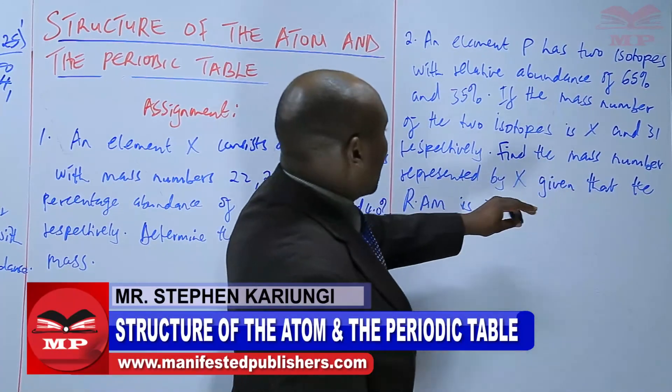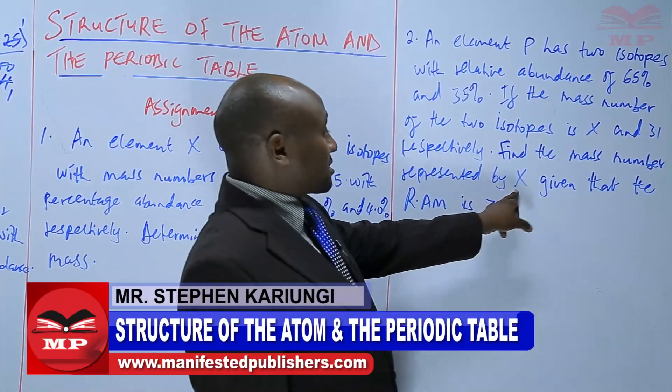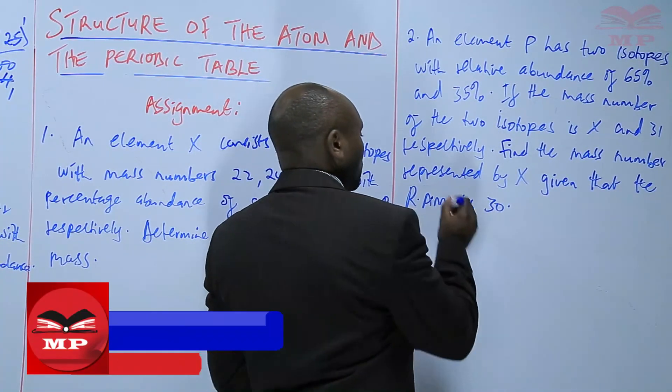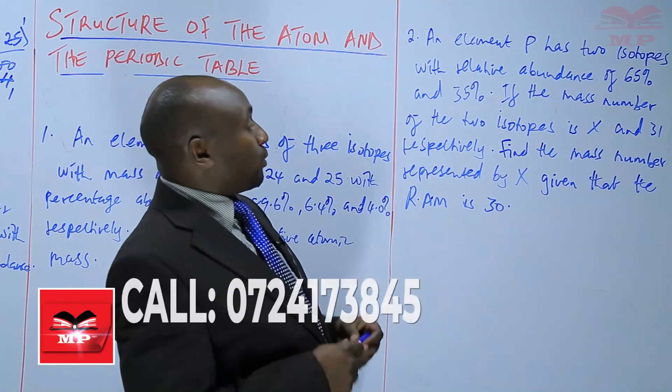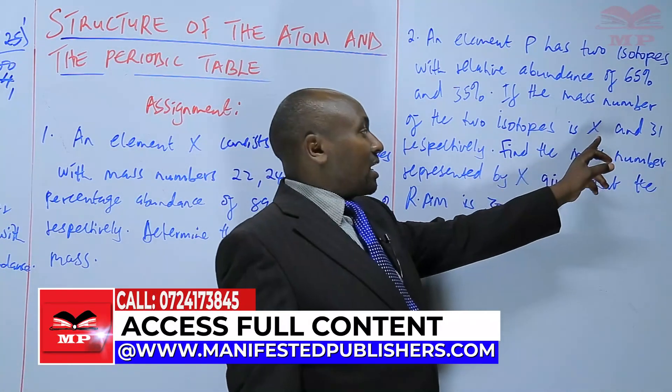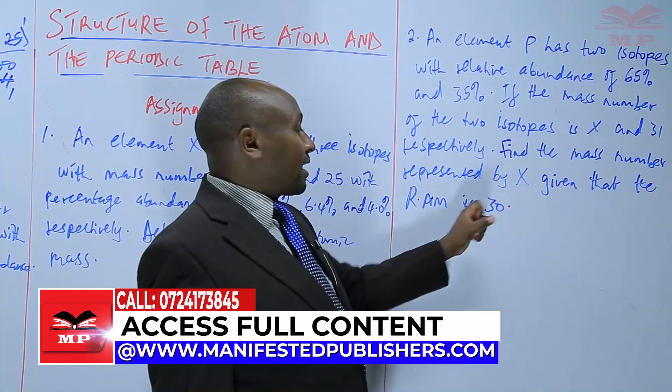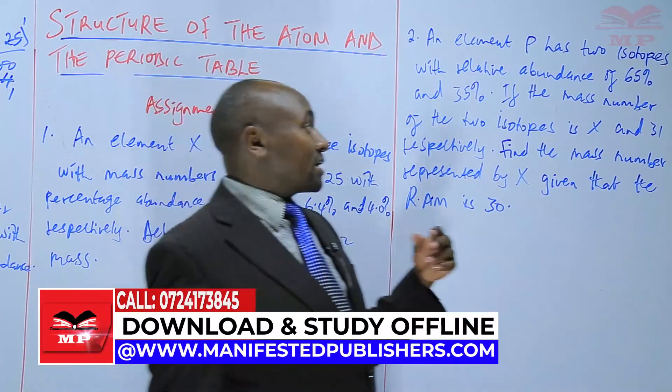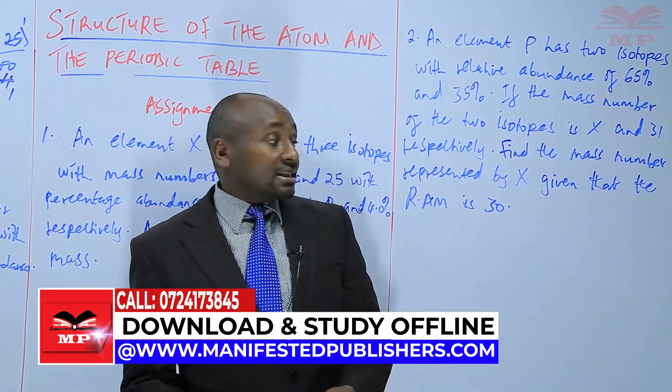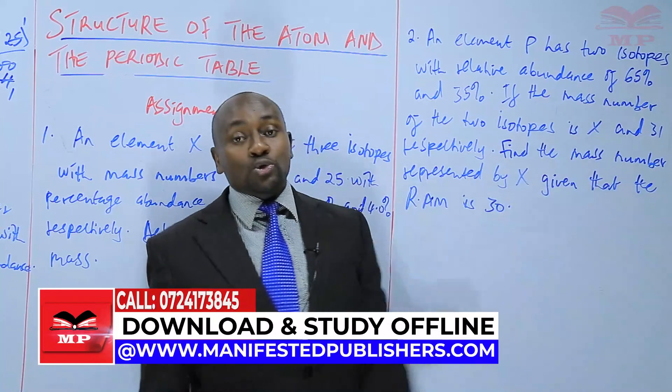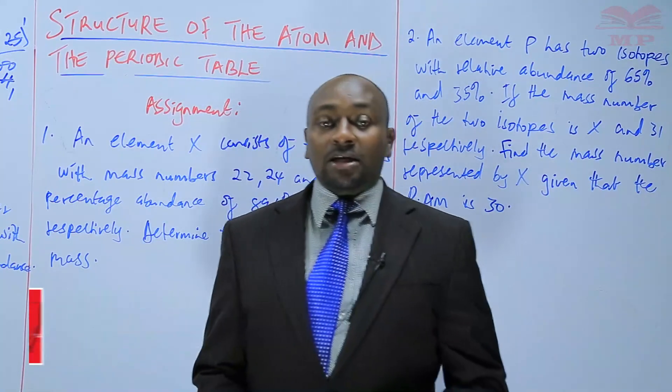Find the mass number represented by X given that the R.A.M. is 30. So, in this case you're supposed to calculate with X as the unknown but on this we know the relative atomic mass so, we can be able to work backwards still using the same formula and get the mass of isotope that is X. So, we'll stop there until next time goodbye.